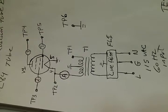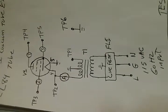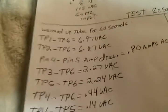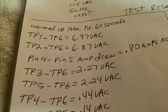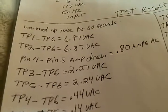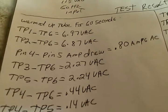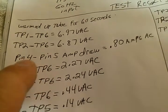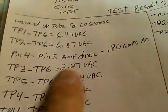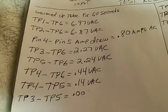So we were seeing what the electron flow was as it was just idling here and these are the results. Tubes warmed up for at least 60 seconds. We also did an amp check on the filament. It was about 0.8 amps. That was pin four to five. And these are the other results we've got here.